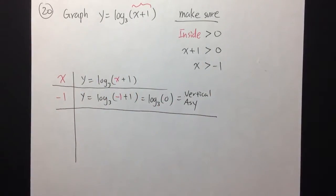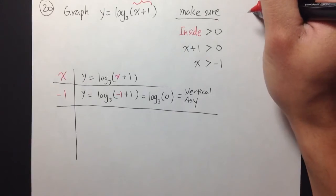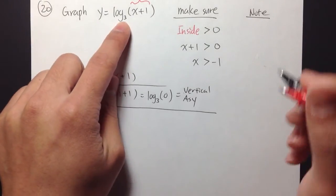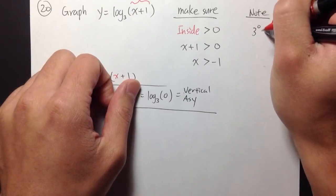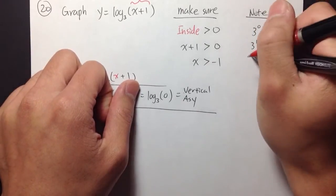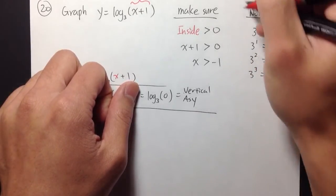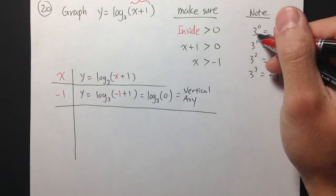Next, I'll choose some other x values and create a table with 3 or 4 points to make a nice graph. Because we're dealing with log base 3, let me write down some powers of 3 as a reference: 3 to the 0 power is 1, 3 to the 1st power is 3, 3 to the 2nd power is 9, 3 to the 3rd power is 27. That's why I write down powers of 3 — because we're dealing with log base 3.